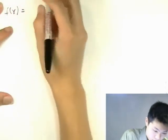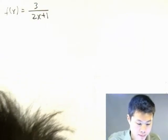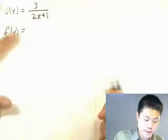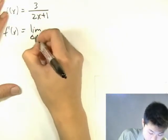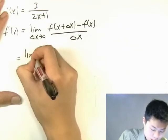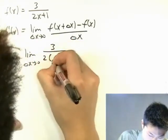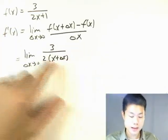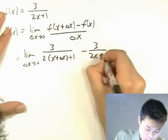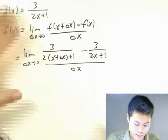Okay, now for our next example. So it's going to be f of x equals 3 over 2x plus 1. So let's find the derivative of that. We're going to write out the limit definition again and plug in the actual function. That's kind of tedious. So 3 over 2 times x plus delta x plus 1 minus 3 over 2x plus 1, all over delta x.